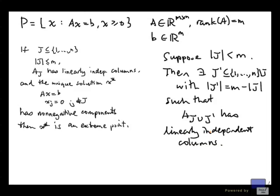So the result that we're using is, if you have a matrix with rank m, that means you can find m linearly independent columns. And if you start with a set of columns that has fewer than m elements, you can extend that by picking columns from your matrix to give you a set of m columns that are linearly independent.